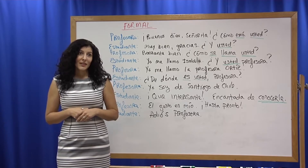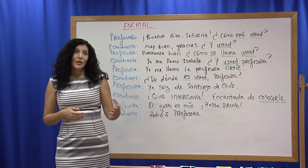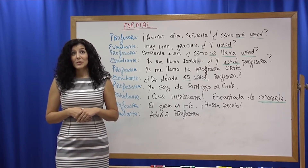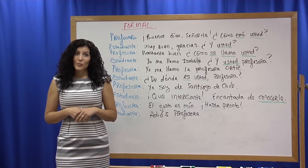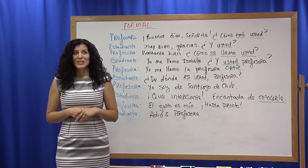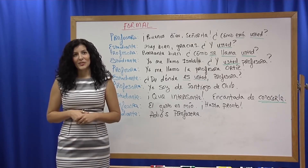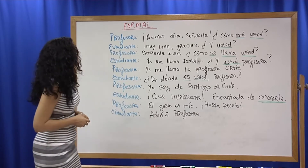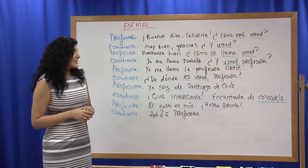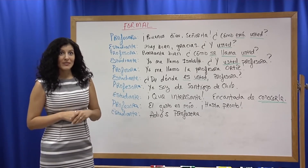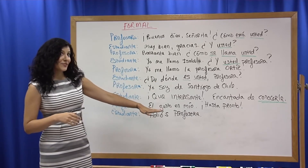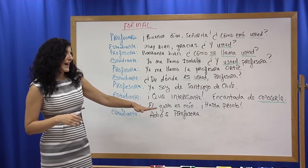When speaking to your professor, to the president of your college, or to someone who has authority over you — such as your boss or a supervisor — you would always use the formal rather than the informal to express respect and reserve. In the scenario that we just saw, there are many instances in which the formal was used as opposed to the informal. You will notice that they are all highlighted in green in the conversation.